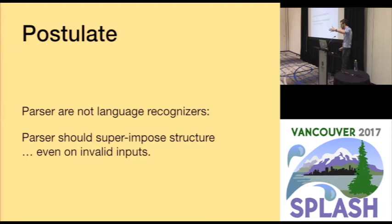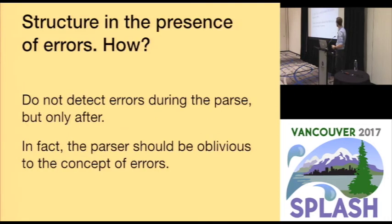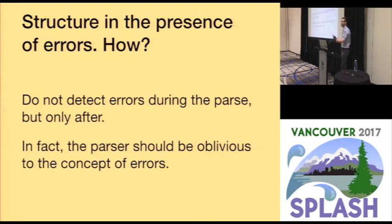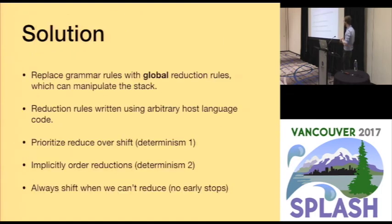You might have a syntactic error in one function but the next function is correct, and you still want type information from it. So how do we avoid errors in parsing? Just don't detect them. The approach I'm suggesting doesn't even have a concept of error — it just tries to match things, and if it can't, it carries on further into the input and tries to match something else. There's no built-in concept of error; errors are detected after the parse is finished.